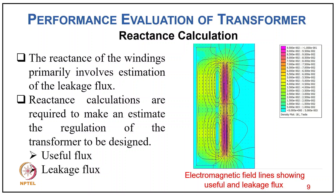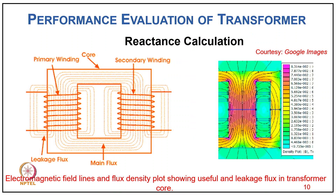For reactance calculation, the reactance of the windings primarily involves estimation of the leakage flux, and reactance calculations are required to estimate the regulation of the transformer being designed. We identify useful flux and leakage flux from electromagnetic flux line plots. The leakage flux is confined to only the particular winding limb, while the flux linking both windings is called the useful flux. This is also confirmed through FEM element analysis showing two different kinds of fluxes.